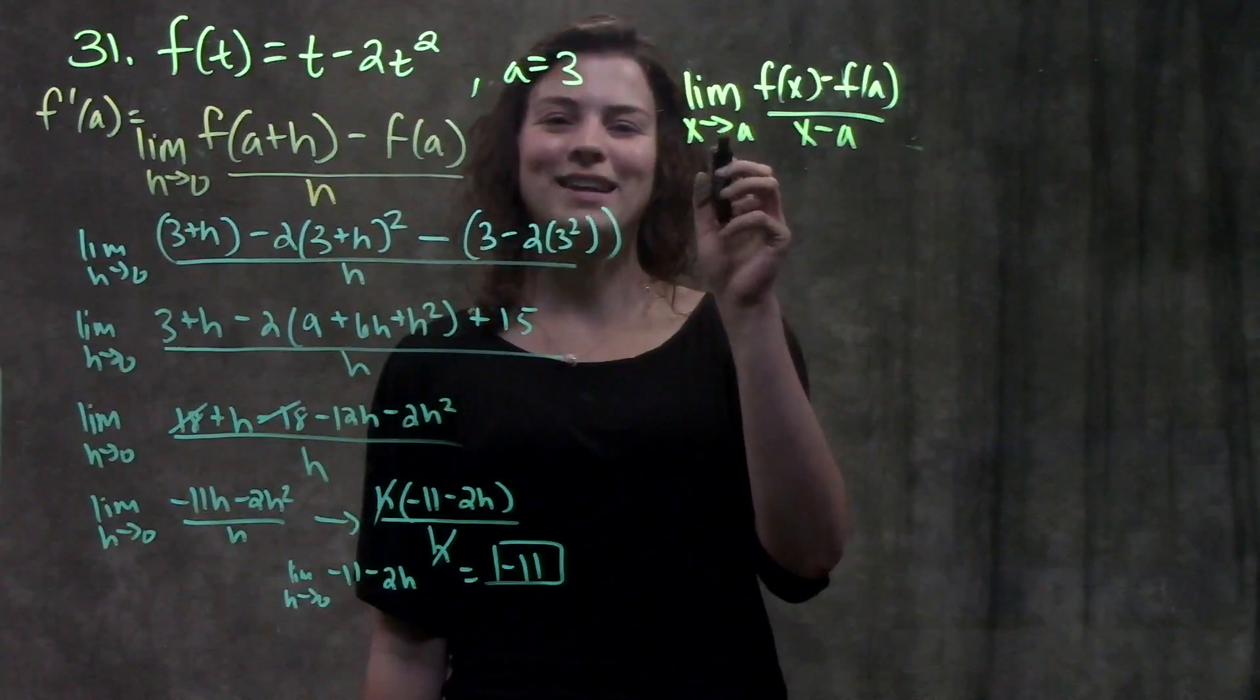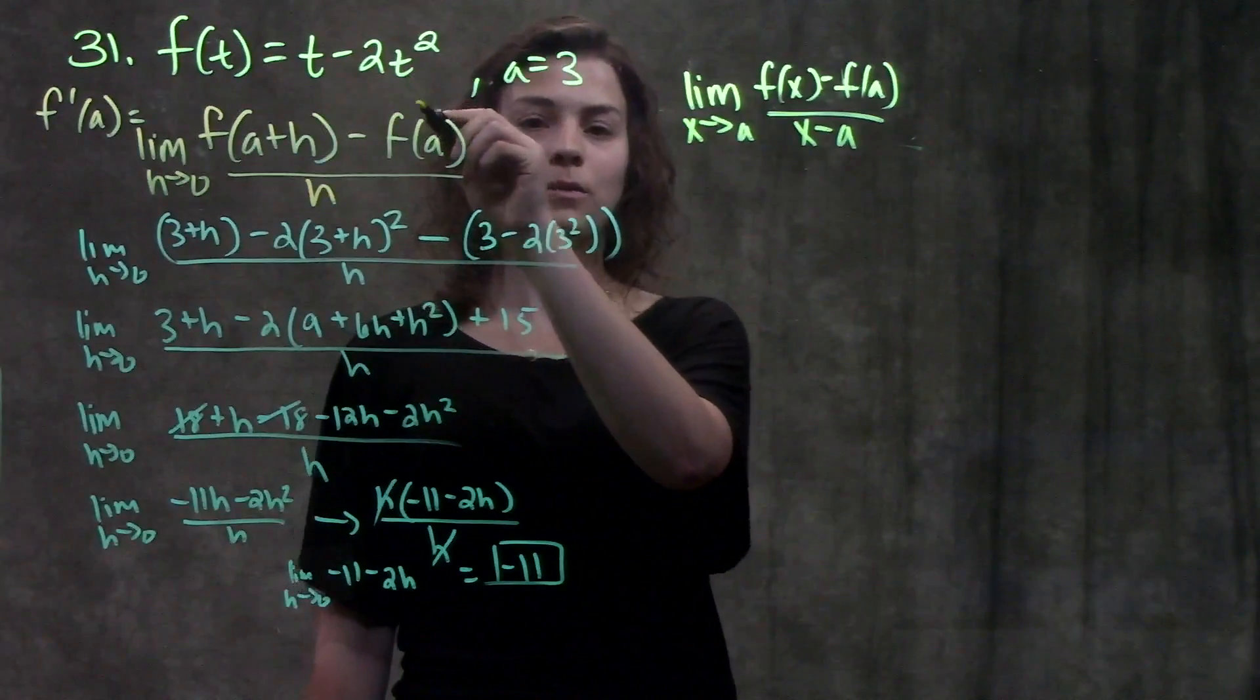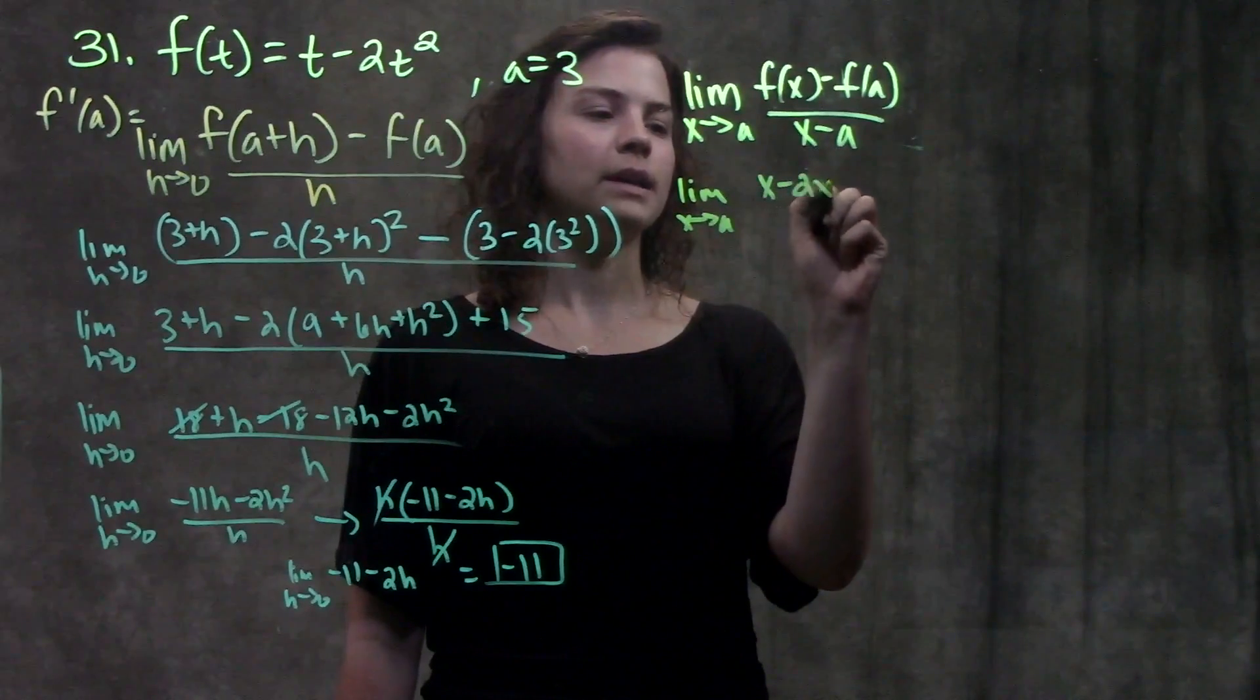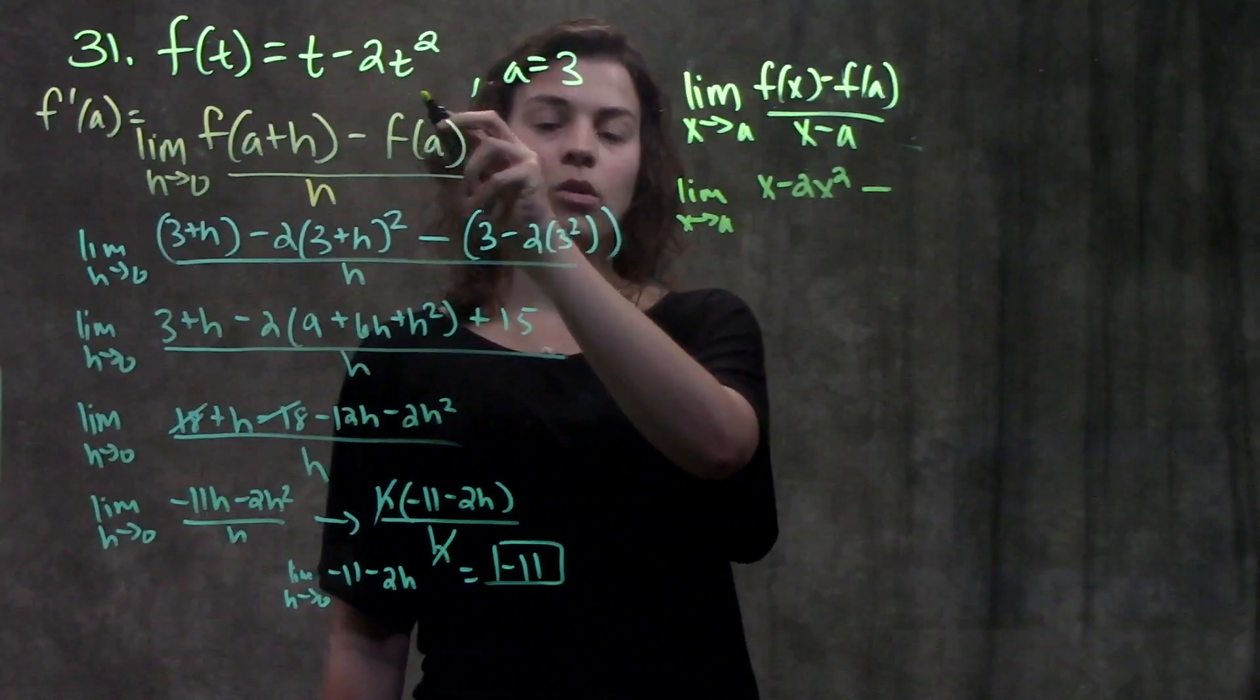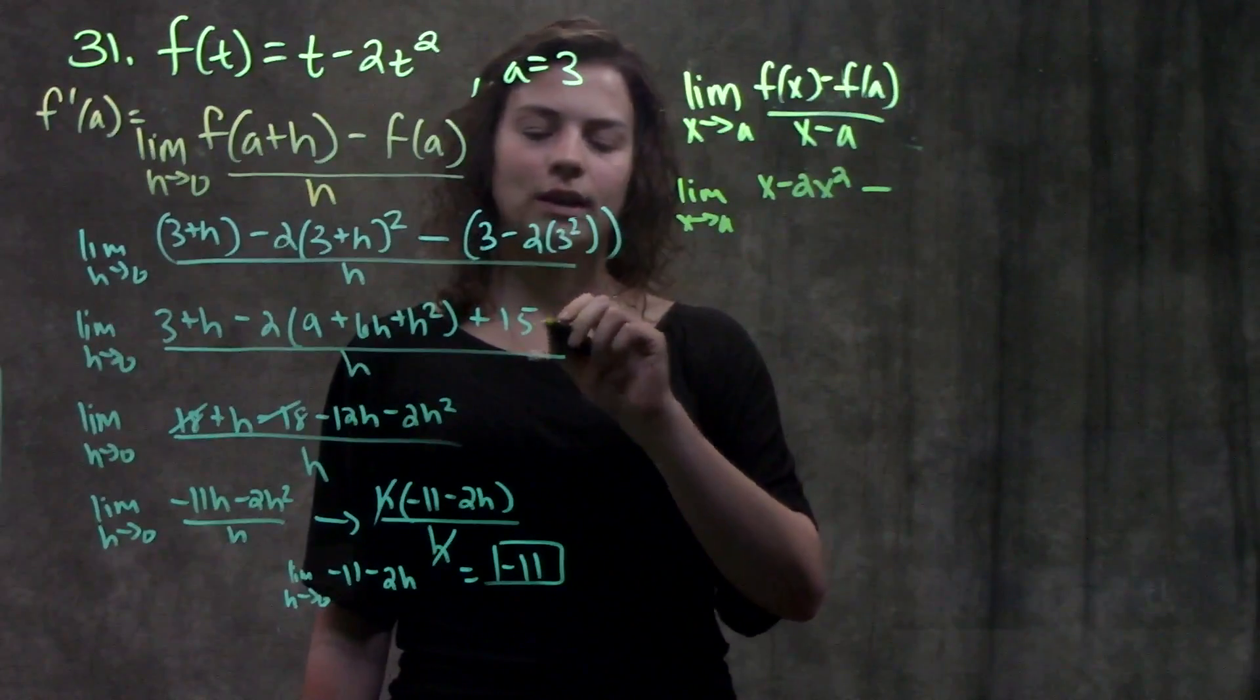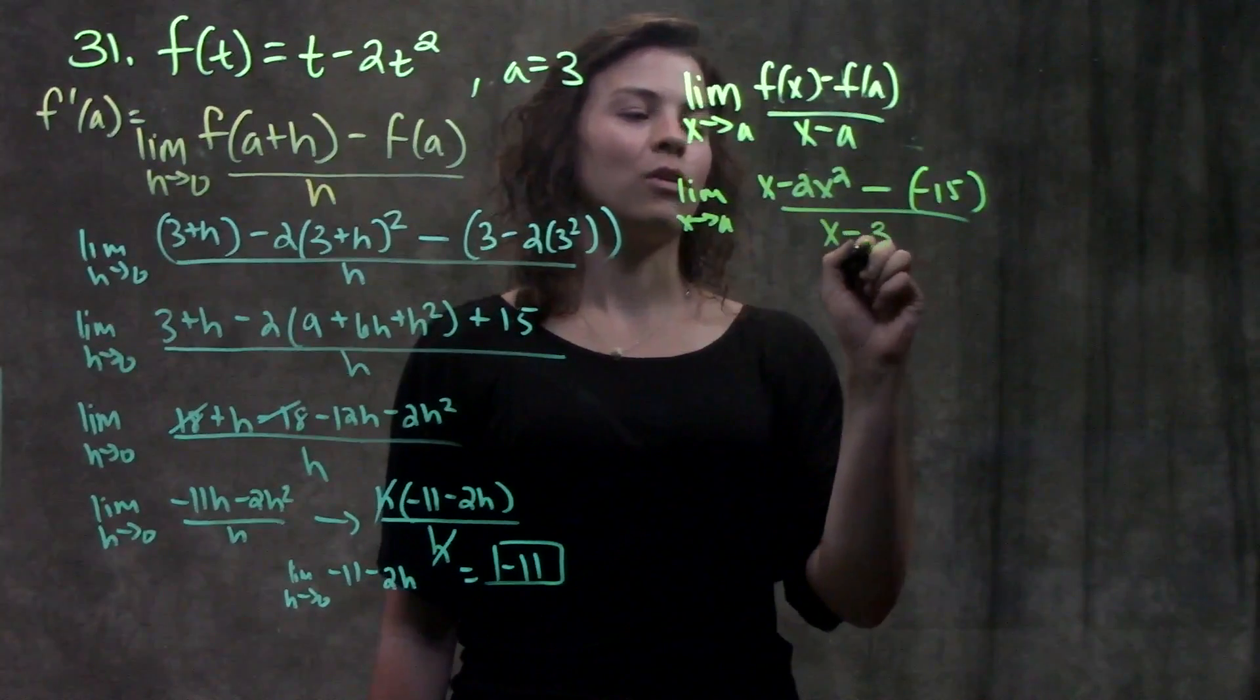This is the limit as x approaches a. Let's go through it. The first part says f of x, so that just means I'm going to plug x in wherever I see a t in my function. So I have the limit as x approaches a of x minus 2x squared minus whatever I get when I plug a into my function, or whenever I plug 3 into my function. If you remember, when we plug 3 into our function over here, we got minus 15. I'm going to skip the step. All that over x minus a or just x minus 3.